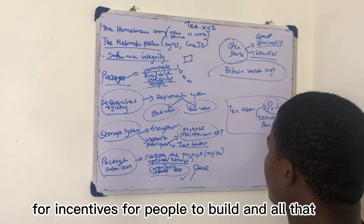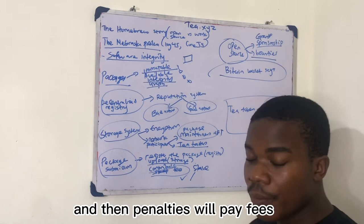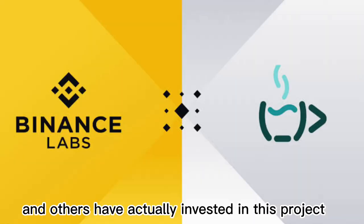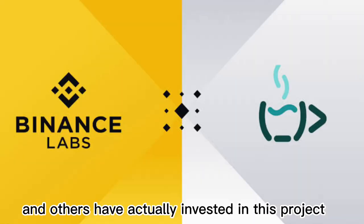It has its own blockchain, a proof of stake blockchain, so it is for staking, delegating and all that, for incentives for people to build and be of good behaviors. And then penalties - you pay fees if you do something on this. So that is just a brief about the T.SY project. The founder of Homebrew is the one behind this, and the likes of Binance Labs and others have actually invested in this project.